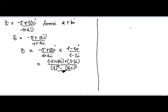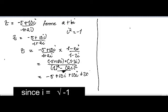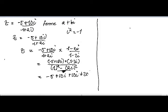This part here is simply the difference of two squares. If you multiply 1 times 1 and 1 times negative 2i, you'll see that we get this value. So let's expand the numerator. We have negative 5 times 1, plus 10i, and negative 20i². Since i² equals negative 1, negative 20i² becomes positive 20.